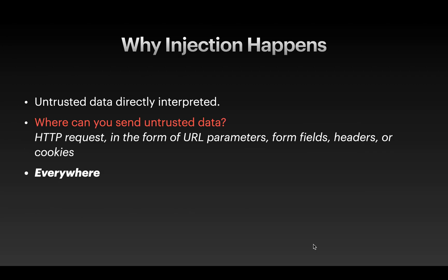The most important thing — why does injection happen? Injections happen because of untrusted data that is directly interpreted by any interpreter of a web application. Where can you send untrusted data? If you want to perform an injection attack on a website, you can send untrusted data in an HTTP request in the form of a URL parameter, form field, headers, or cookies — basically everywhere, either as a command or a query.